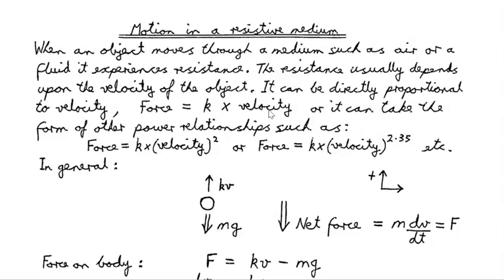We can write the acceleration as the rate of change of velocity with respect to time, dv/dt. Force is a vector quantity, so we refer to the velocity. In general, you can imagine some object — represented here as a circle — falling through some medium, acting under the force of gravity. It is forces that determine the motion of an object, so we must always begin by determining the net force.